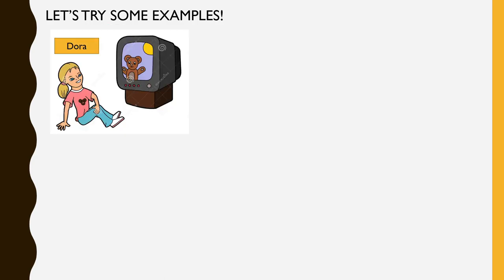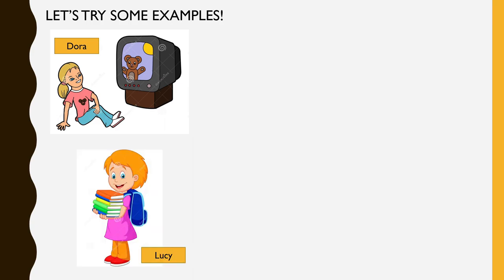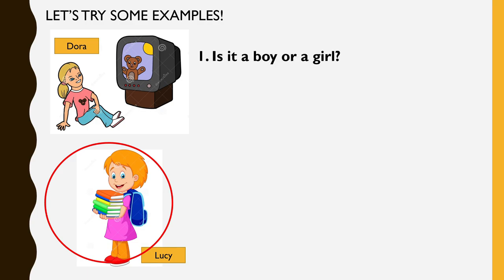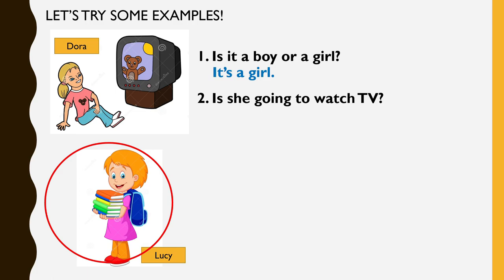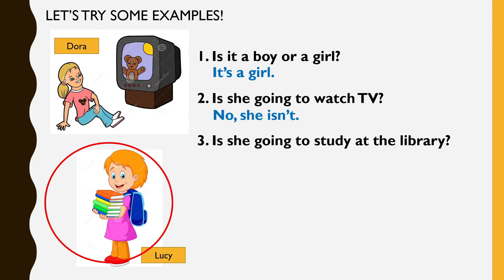Okay, let's try one more example. Sekarang ada dua orang di sini. Cikgu ada sediakan Dora dengan Lucy. Di sini cikgu pilih Lucy. Cikgu sekarang tahu cikgu memang mahu Lucy. Kamu pula yang tanya pada cikgu. Contoh saat kamu akan tanya pada cikgu: Is it a boy or a girl? Jadi cikgu dah pilih Lucy kan? Lucy kan perempuan. So cikgu akan jawab: It's a girl. Kemudian kamu tanya lagi pada cikgu: Is she going to watch TV? Adakah Lucy tengok TV? Tidak. Dia angkat buku kan. Mana ada dia tonton TV. So, no, she isn't. Number three: Is she going to study at the library? Adakah dia bercadang untuk pergi ke library untuk belajar? Yalah kan? Sebab dia bawa buku, dia bawa bag. Rasa dia mahu pergi library. So, yes, she is.